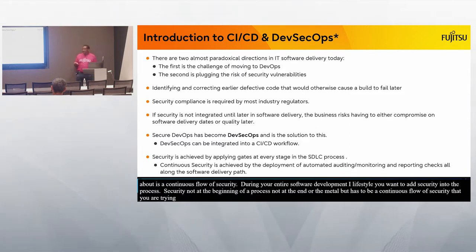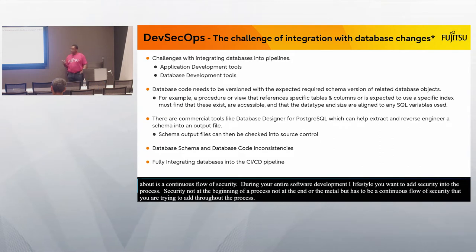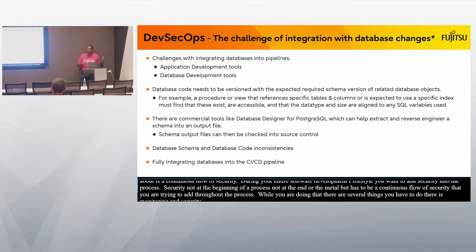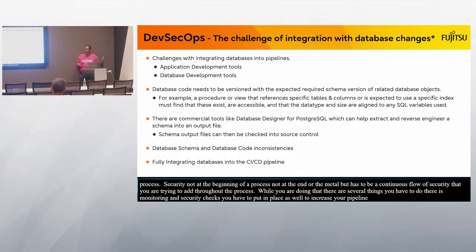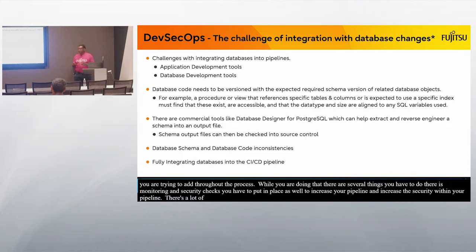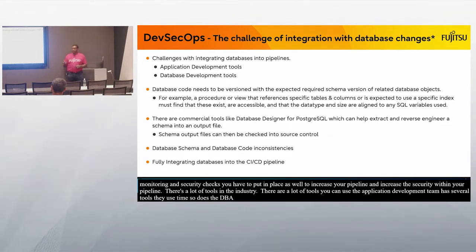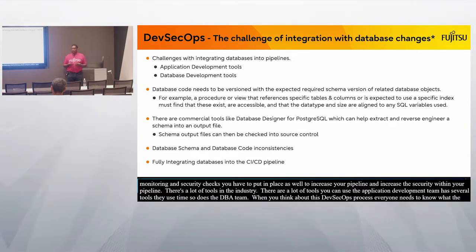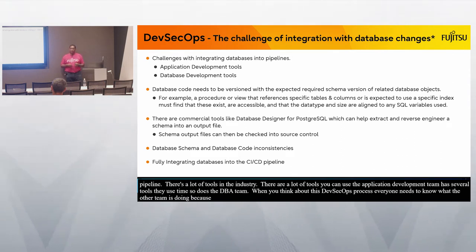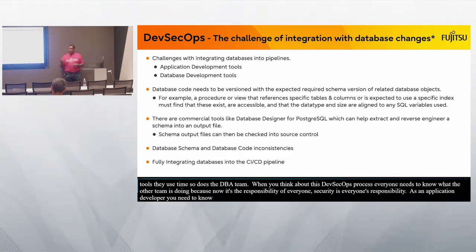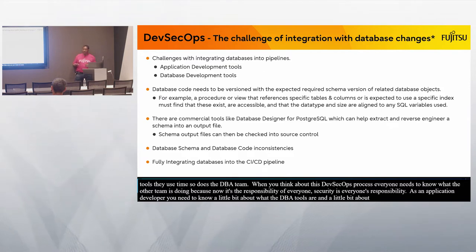There are several things you have to do: monitoring and security checks to increase your pipeline and security within it. There are a lot of tools in the industry — the application development team has tools and so does the DBA team. But in a DevSecOps process, everyone needs to know what the other team is doing because security is now everyone's responsibility. Application developers need to know a little about DBA tools, and DBAs need to know about developer tools, because these tools have key features that affect the other teams.